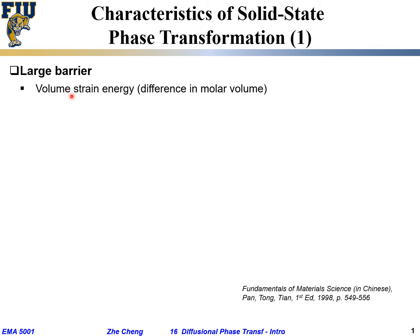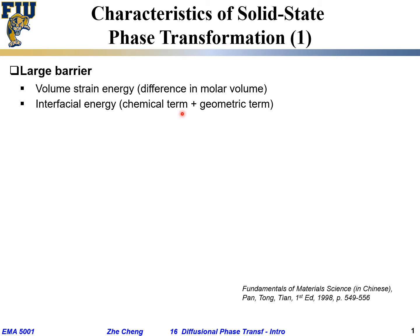Another source of resistance is interfacial energy. Between different solid states there is quite often a distinct interface, and to create that interface — realizing the phase transformation from the initial state to the final state — energy is needed. Interfacial energy may come from a chemical term, where atoms at the interface are bonded to different types of atoms, and also a geometric term, where the new phase and the original phase may not match well at the interface, and the resulting strain energy must be overcome.